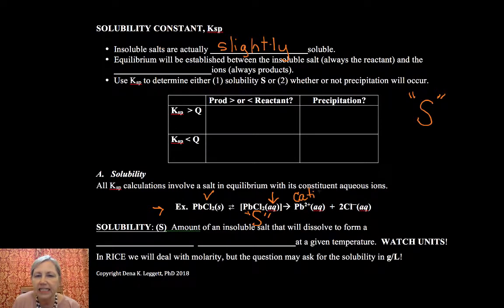Now, back to this reaction. When ionic compounds dissolve, they don't stay as intact formula units. Ionic compounds dissociate into cations and anions. So in this case we'd have lead ion and chloride ion.